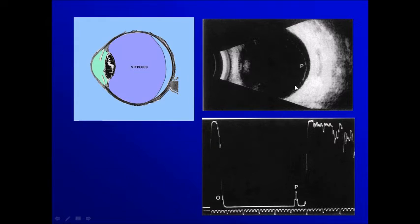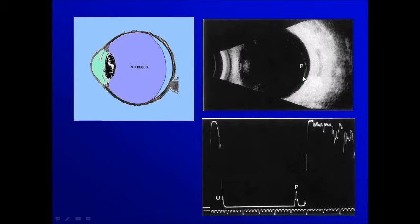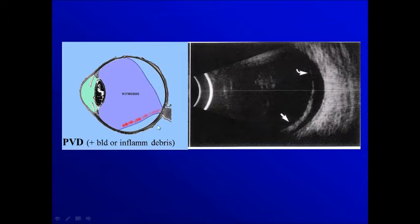If you notice here, we get a posterior vitreous detachment, and if you see the echo here compared to the 100%, it's much lower. We get zero percent here and 100 percent there — either the initial reflection or the cleaner walls. On the B-scan you can tell that this line is not that bright as the background, so we get the same impression that this reflection is not that high. Sometimes if there is some blood, the possibility of detachment, the pseudo-vitreous will be more demarcated and the reflection will be more prominent.